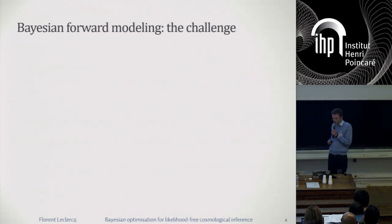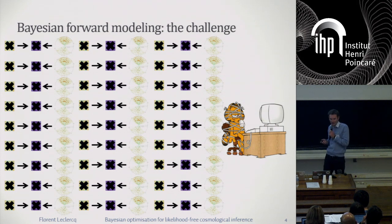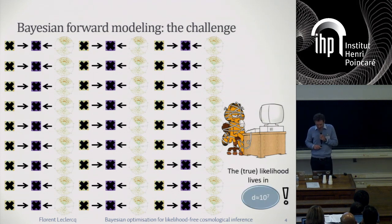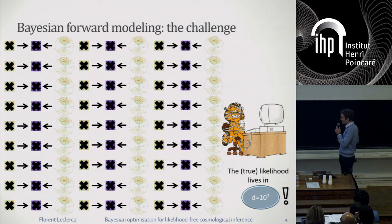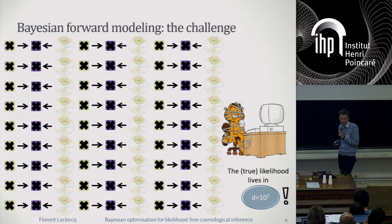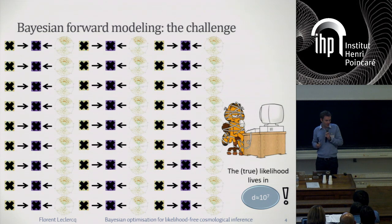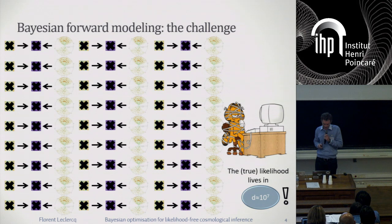Now, if we actually try this in practice, it looks more like this: whatever sample we try is rejected. The main reason why this fails — and it dramatically fails — is that the true likelihood lives in about 10 million dimensions. We are essentially trying to hit a target in 10 million dimensions, which is pretty much an impossible job if we do not have a good method to do so.